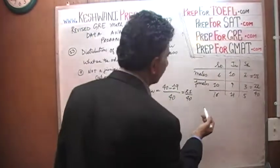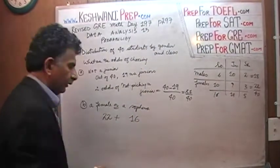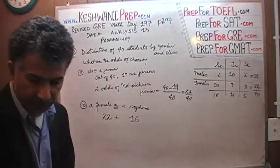Plus there are how many sophomores? Sophomores, there are 16 sophomores.